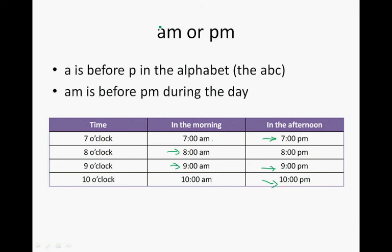So the difference between AM and PM. A is before P in the alphabet. So AM is before PM during a day.